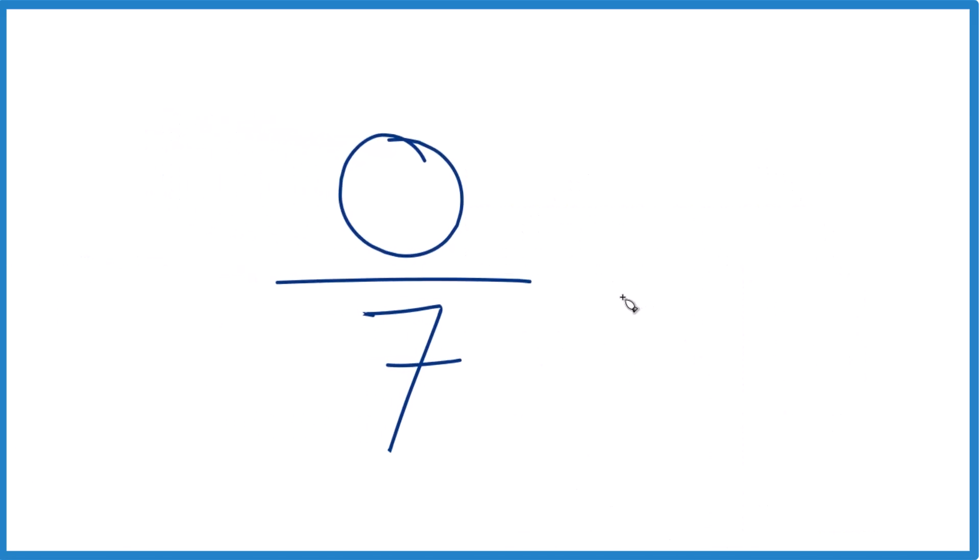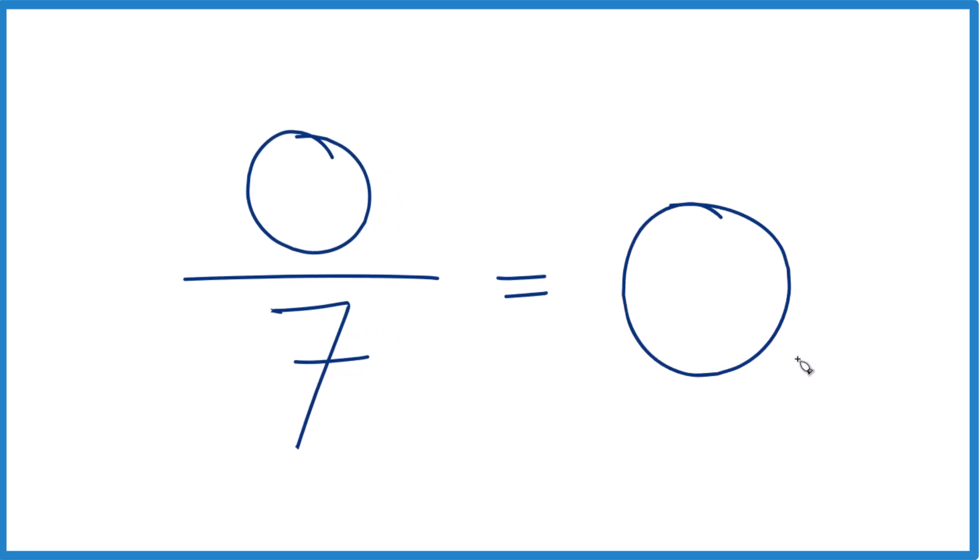And if you don't have anything and you divide it by 7, you still don't have anything. 0 divided by 7, that equals 0.